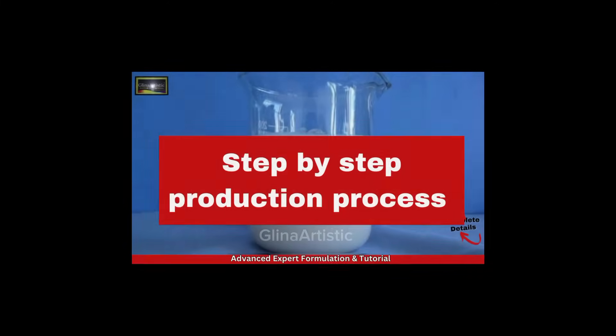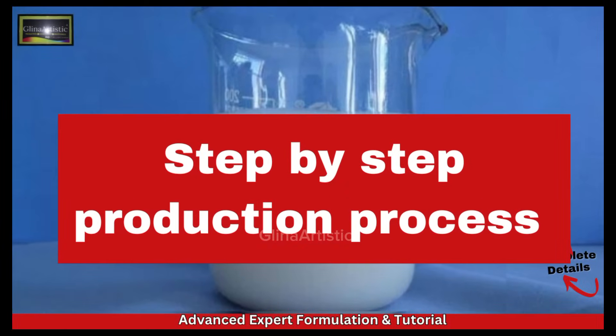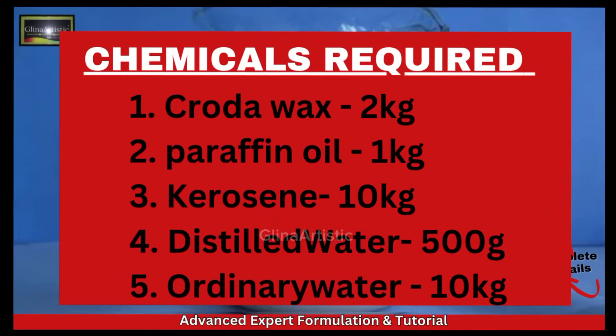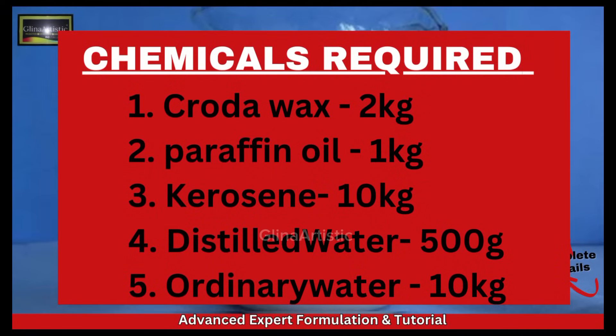Let's look at the step-by-step guide to making your own local-grade deformer. The chemicals required are: number one, colored wax, 2 kg; number two, paraffin oil, 1 kg; number three, kerosene, 10 kg; number four, distilled water, 500 g; number five, ordinary water, 10 g. These are the required chemicals used for the production of the local-grade deformer.